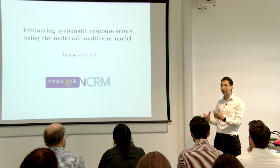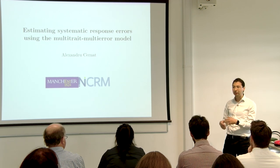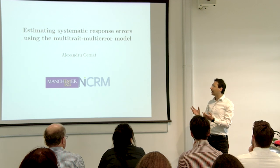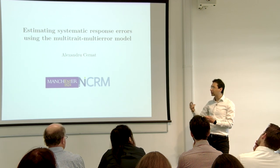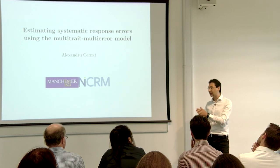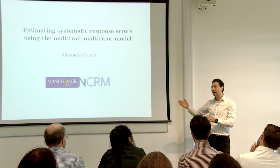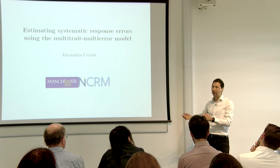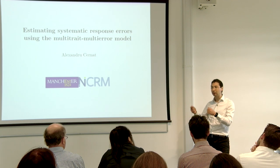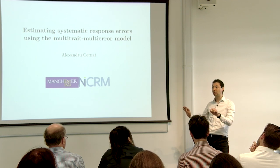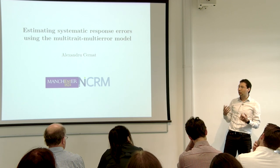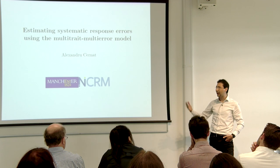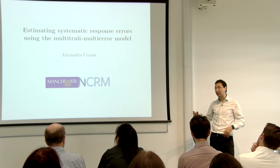Then we talked about systematic error — which me and Danelle don't really like — or validity. That's when, for example, I ask you using one method, like a ten-point scale, and you tend to always be higher or more positive than when I use a five-point scale. That's systematic because of the way I ask you, just because of the response scale. So in survey methodology, a systematic effect due to method is because of the response scale.